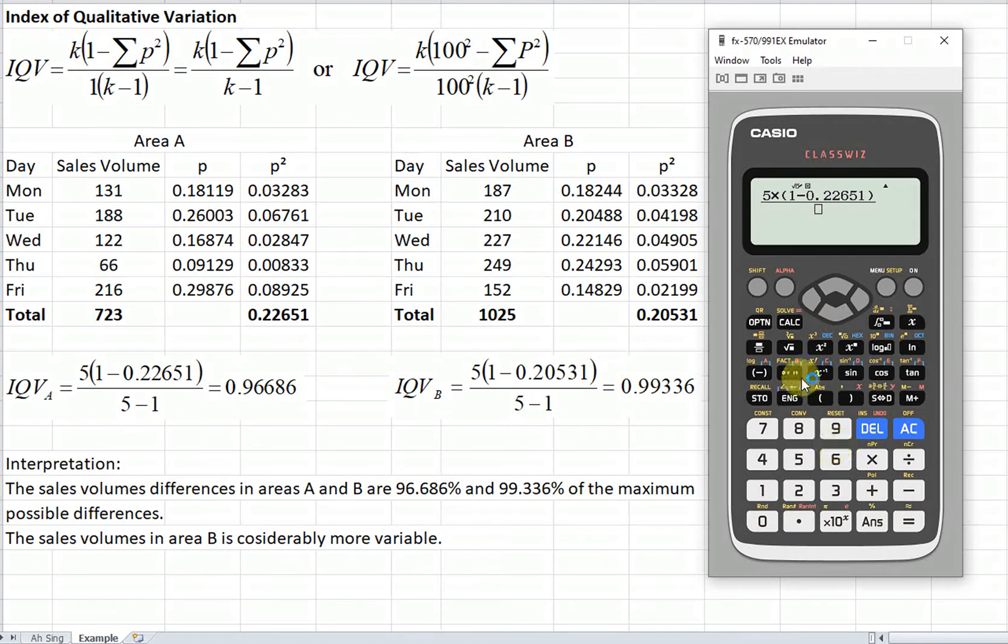So K minus one, K is five minus one. So we will obtain the variation for this data set.